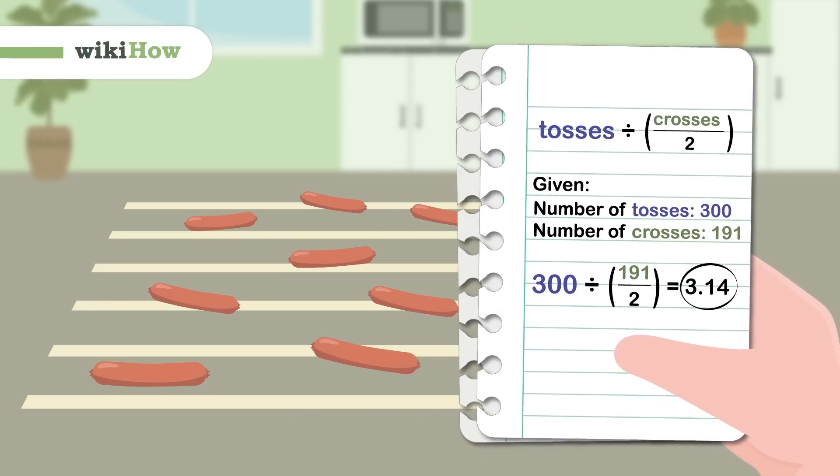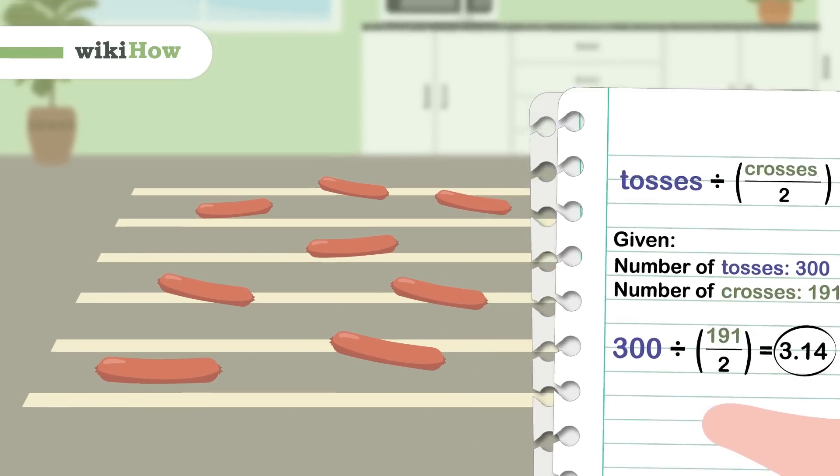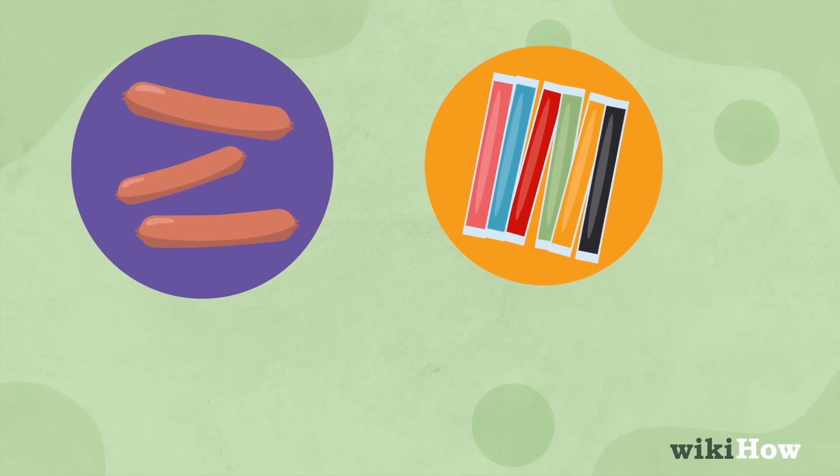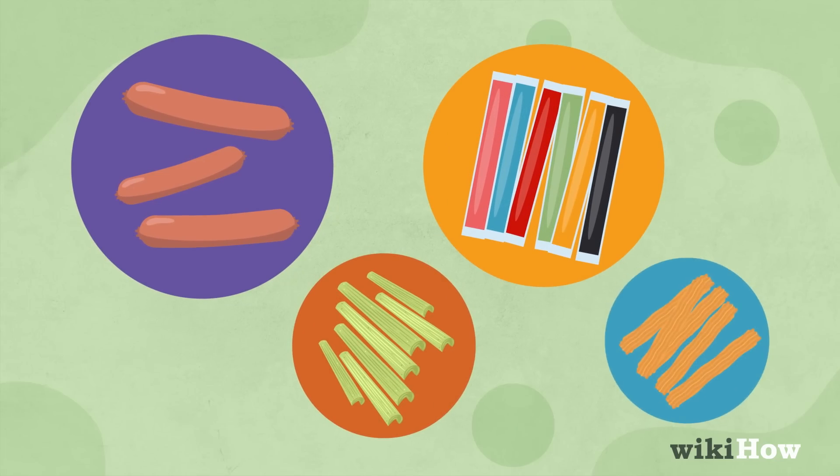You can find the number pi using fun and satisfying methods. For example, you can simply throw food items like frozen hot dogs, otter pops, celery, or churros from your kitchen.